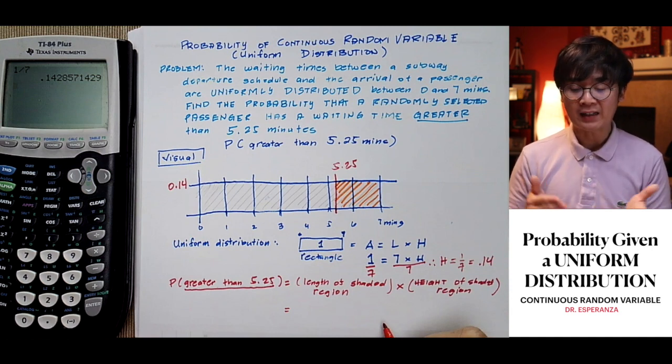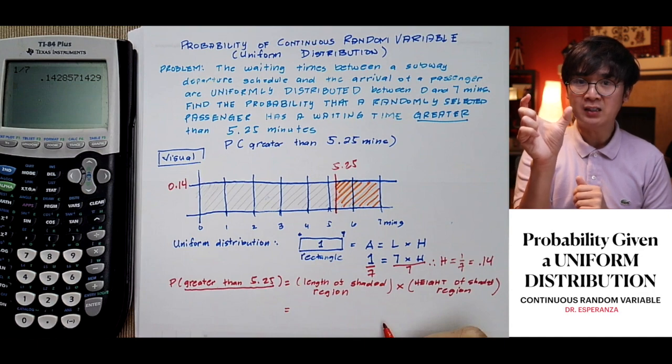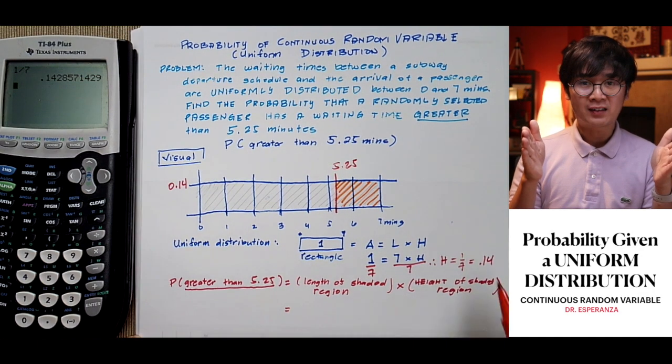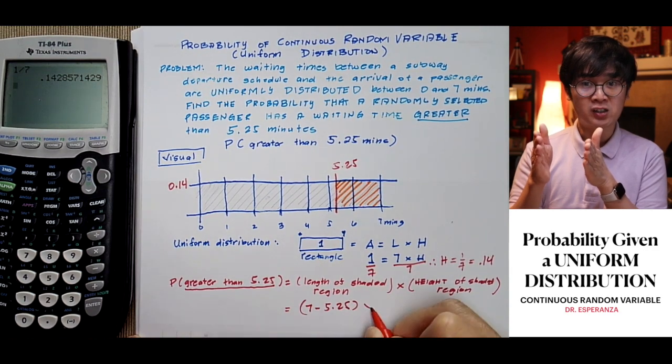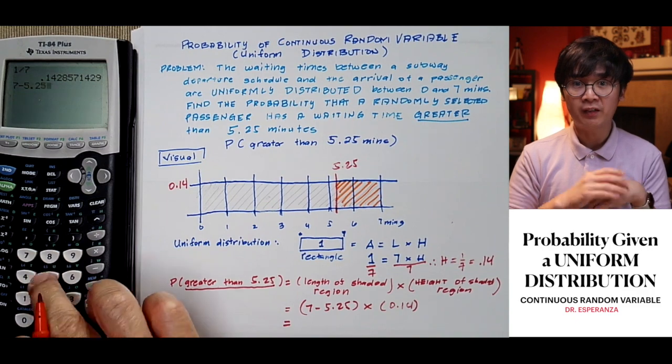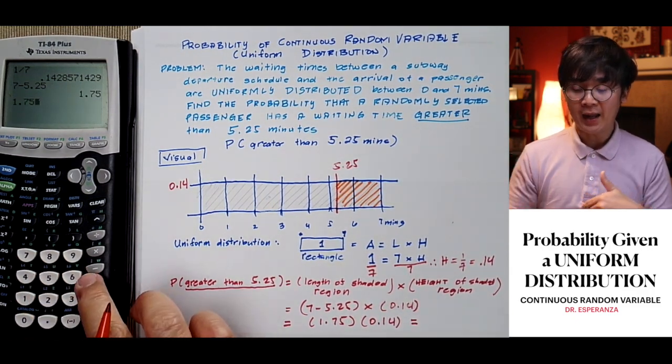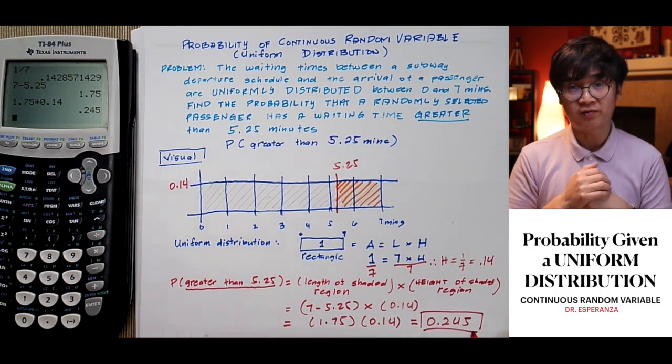To find the area of the shaded region, the total is 7, our shaded region starts at 5.25. We subtract to get 1.75, multiplied by the height, which is 0.14. The value is 0.245.